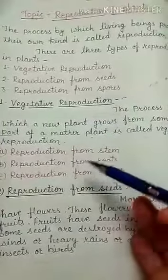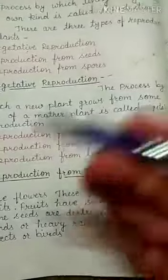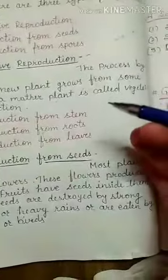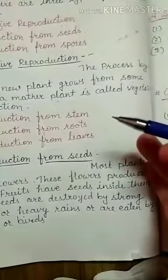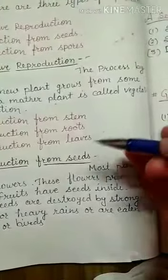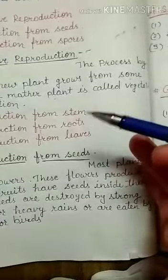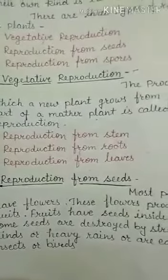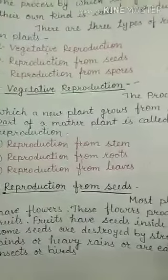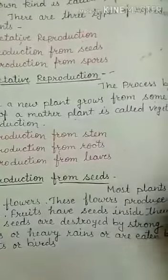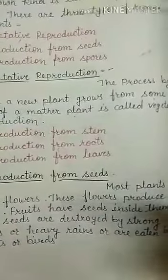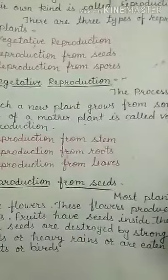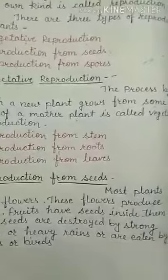Next is reproduction from roots. Roots of some plants such as sweet potato grow into new plants. When we eat a sweet potato we are actually eating the root of that plant. This special root, if planted, grows into new plants. Carrots and radish are roots that have been modified to store food.